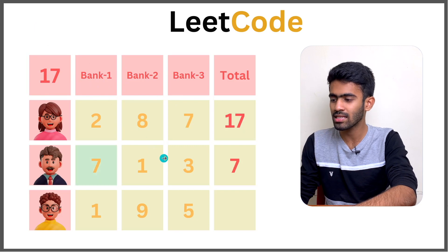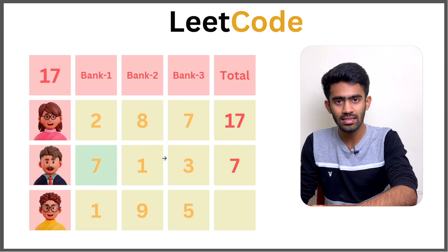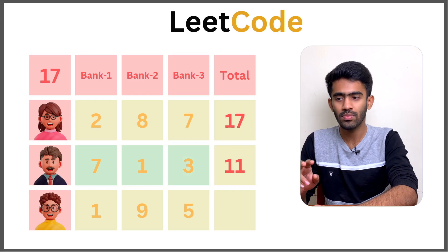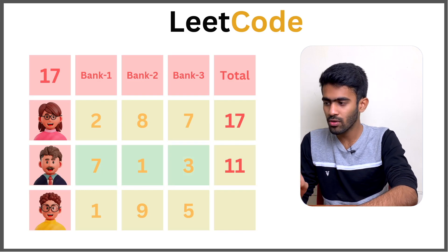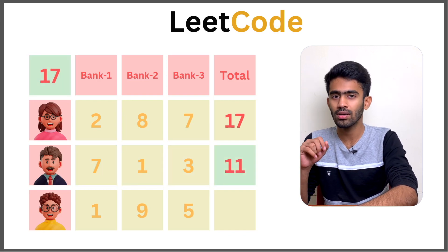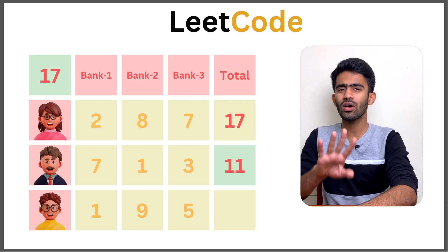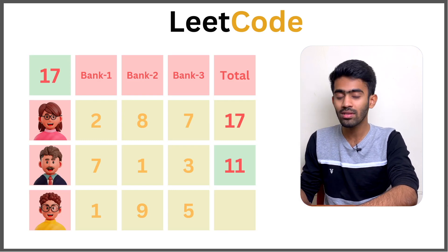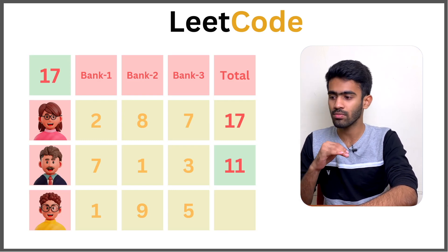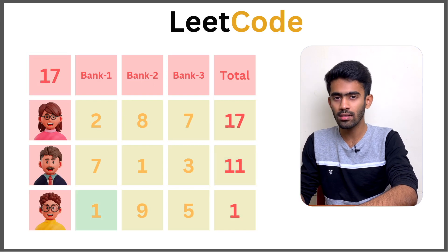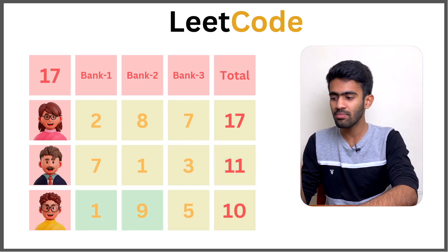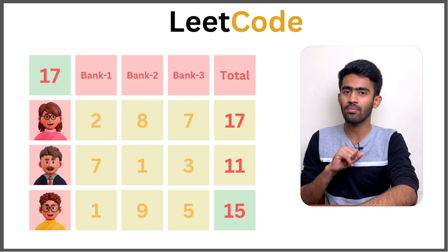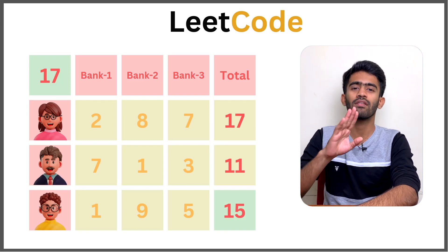For the first customer, wealth is 17 — we compare with the initial minimum and set maximum to 17. For the second customer: 7 plus 1 plus 8 is 16, plus 3 is 11 — we compare 11 and 17, so maximum stays 17. For the third customer: 1 plus 9 is 10, plus 5 is 15 — we compare 15 and 17, so maximum stays 17.